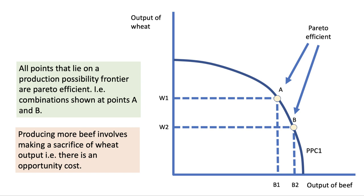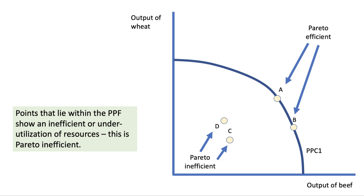Moving from A to B involves a sacrifice. We're increasing our output of beef from B1 to B2 — there's an opportunity cost here — we're sacrificing some production of wheat. But A and B would both be Pareto efficient; they lie on the curve.